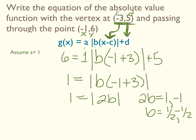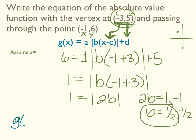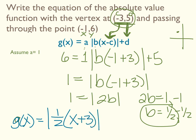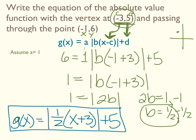Because the vertex at negative 3, 5 is in quadrant 2, we go with the positive value of b, which is one half. So we rewrite g of x equals the absolute value of one half times parenthesis x plus 3, plus 5. You don't have to distribute the one half — just leave it factored, and you're done.